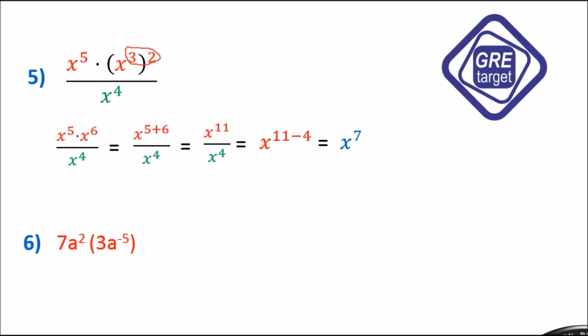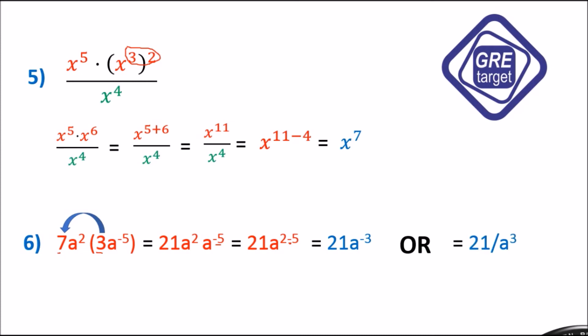Example 6: The common numerical factor is 7 times 3 equals 21. For the variable part, we apply the product rule to a squared and a raised to minus 5. Adding 2 plus (minus 5) gives minus 3, so we get 21 times a raised to minus 3, which can also be written as 21 divided by a raised to 3 using the negative exponential rule.